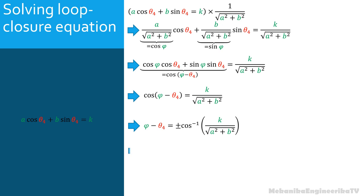There are two possible solutions for the angle θ4. These two solutions correspond to two different possibilities to assemble the four-bar linkage. They correspond to the two circuits of the four-bar linkage.